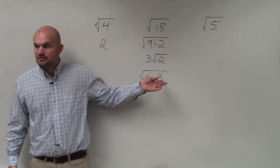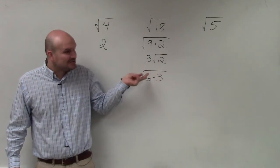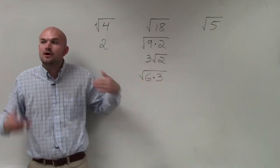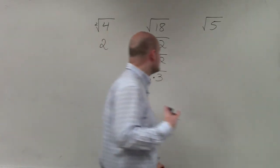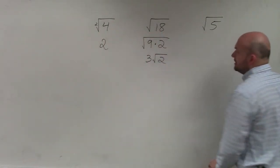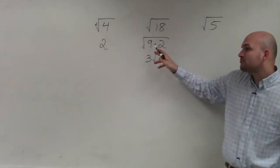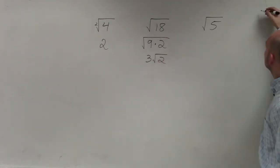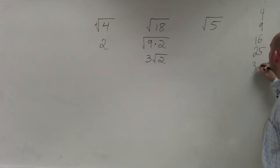You could do 6 times 3 equals 18, yes. But can you take the square root of 6? No. Can you take the square root of 3? No. So what you're trying to do when you're simplifying is find the product of that number with a square number. Well, what are square numbers? 4, 9, 16, 25, 36, 49, 64, 81, 100.